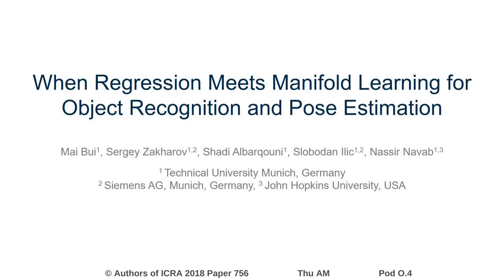Today we present our work when regression meets manifold learning for object recognition and pose estimation. We propose a multi-task deep learning framework which uses a combination of feature learning and direct pose regression to efficiently infer object poses as well as classes. We show that our model improves upon the baseline methods in both aspects.